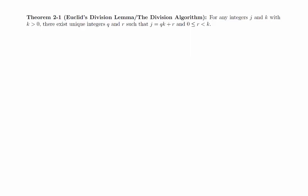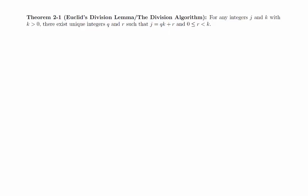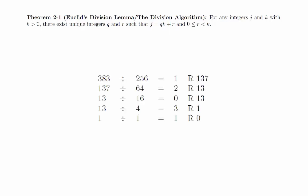Theorem: For any integers j and k with k greater than 0, there exist unique integers q and r, such that j equals q times k plus r, and 0 is less than or equal to r is less than k. All of these values have names: the integer j is called the dividend, k is called the divisor, q is the quotient, and r is the remainder. Incidentally, we implicitly used this theorem in the previous section when we calculated the base 4 representation of 383.